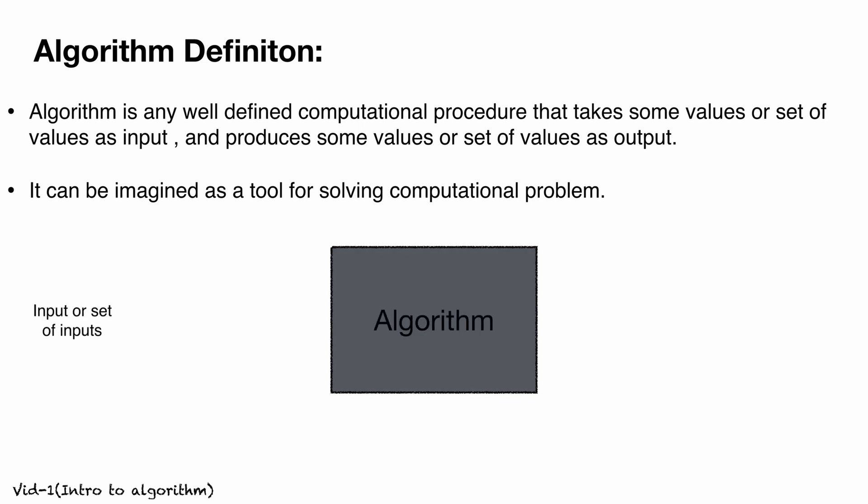So here is an algorithm. We give inputs to it, and the algorithm provides output or a set of outputs. Now, ignoring the cooking example, let's consider a more formal sorting problem.